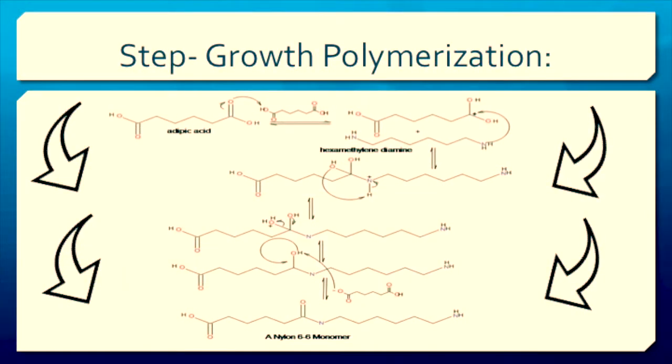The second common method of polymerization is referred to as step growth polymerization. This method typically involves the reaction between two different difunctionalized monomers in which both functionalities react to form the polymer. Polyamides such as Nylon-6-6, prepared by reacting a diacid or diacid chloride with a diamine, are an example of this type of polymerization.